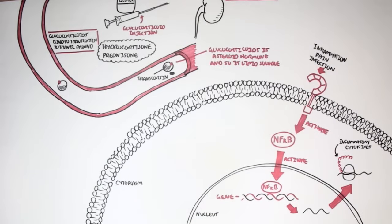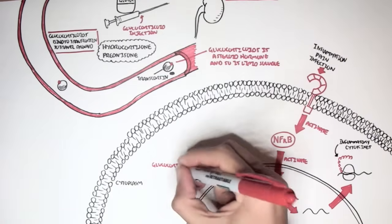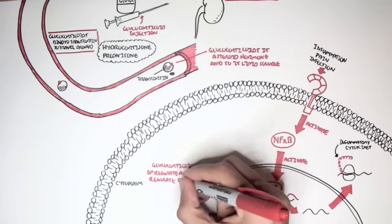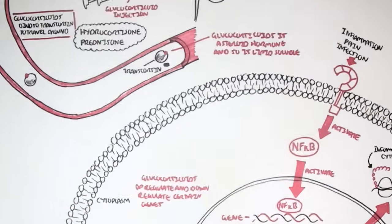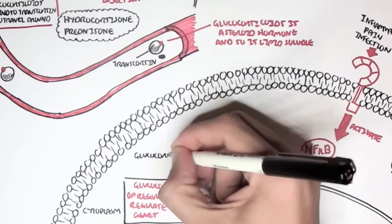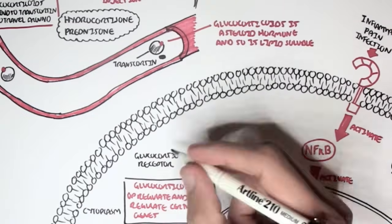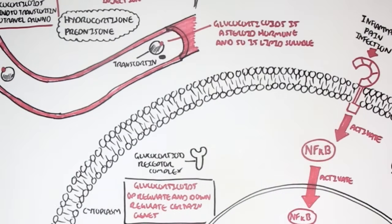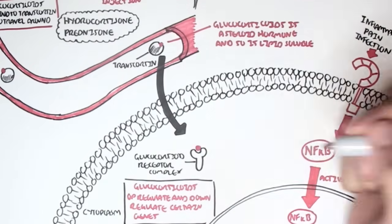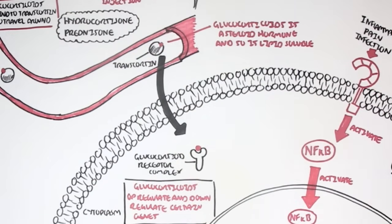So what does glucocorticoids do? Well, as mentioned, glucocorticoids will up-regulate or down-regulate certain genes. And for an example, glucocorticoids, which is a lipid-soluble hormone, will travel around the body with transcortin. The glucocorticoids will enter the cell and bind onto a glucocorticoid receptor.